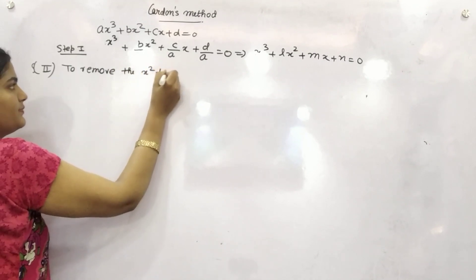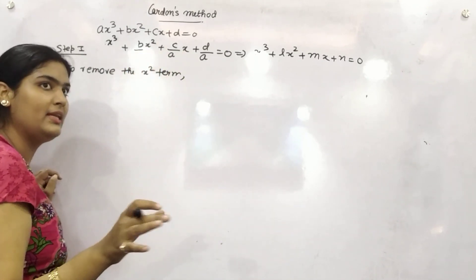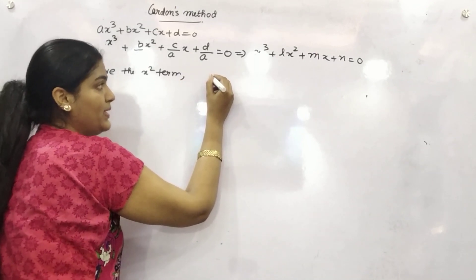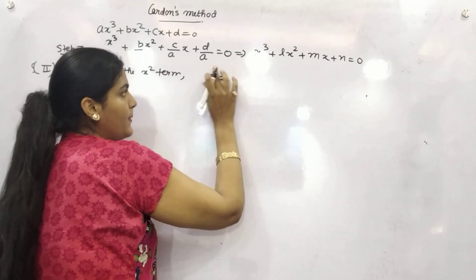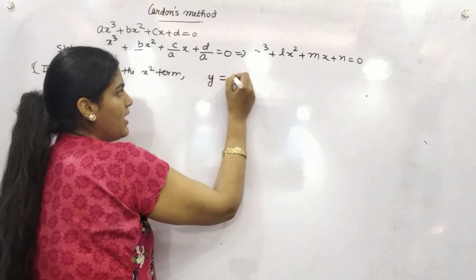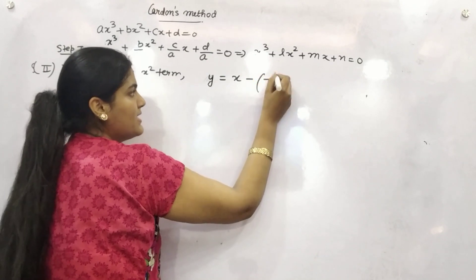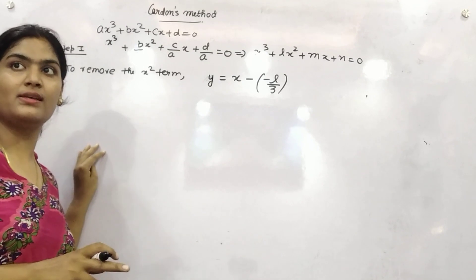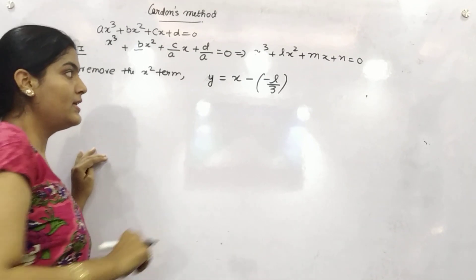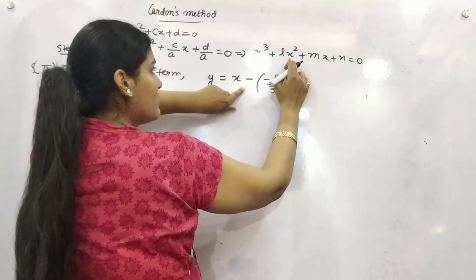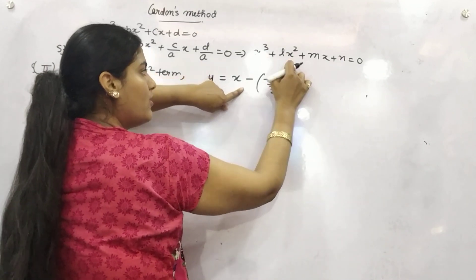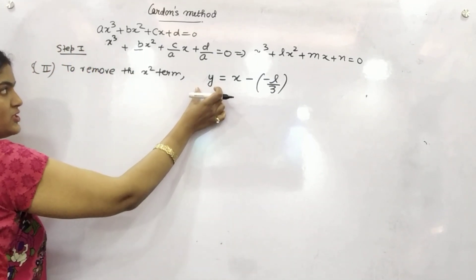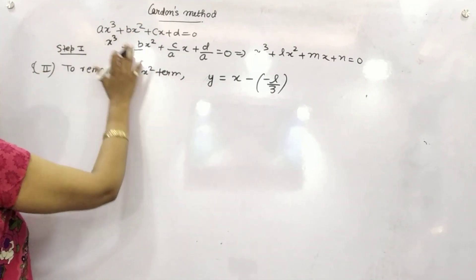the x squared term, you need to remove x squared term completely. For now, you need to take care that your y should be x minus minus l by 3. All right, so you can see here, your l is, l will be the coefficient of x squared. Once you will get this, then you need to substitute this y into the formula.